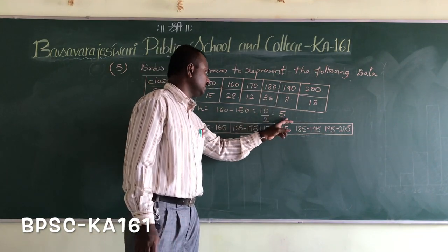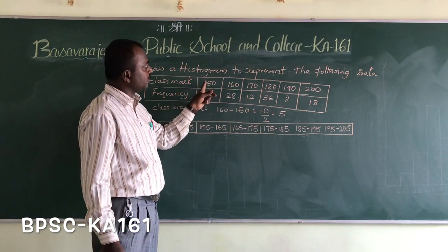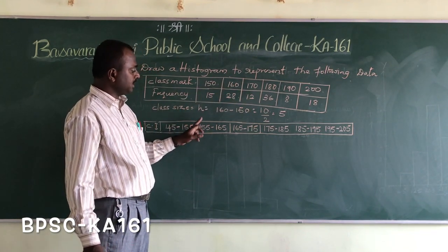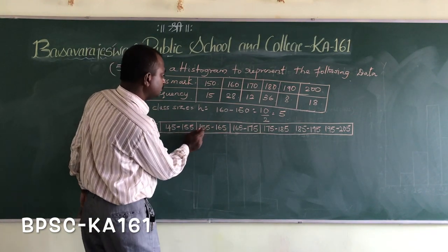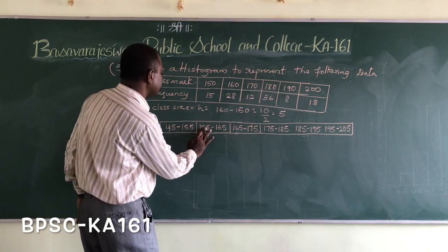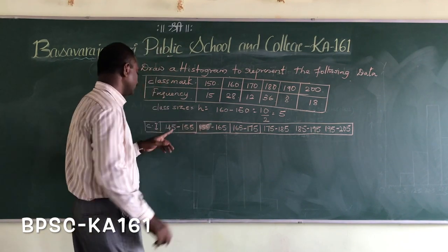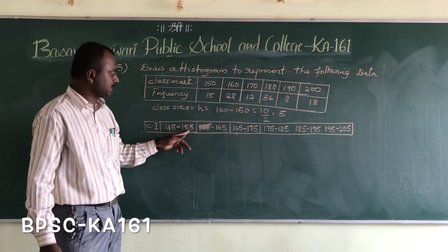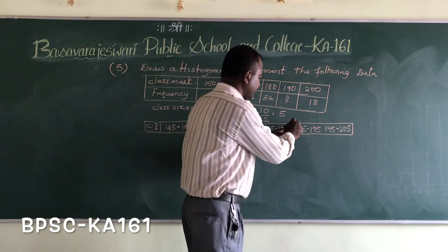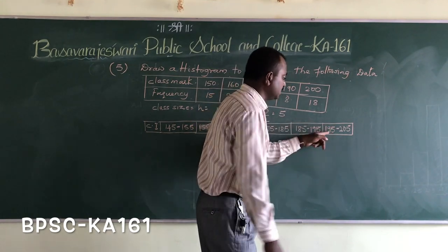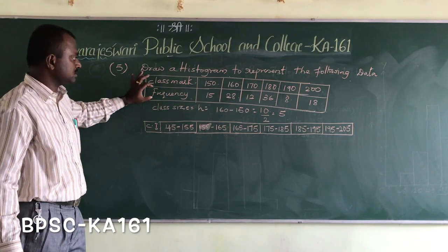With h equal to 5, we subtract 5 from 150 and add 5 to 150 to get the lower limit and upper limit. So the class intervals are: 145 to 155, 155 to 165, 165 to 175, 175 to 185, 185 to 195, and the last is 195 to 205. This gives us the complete class interval table with frequencies.